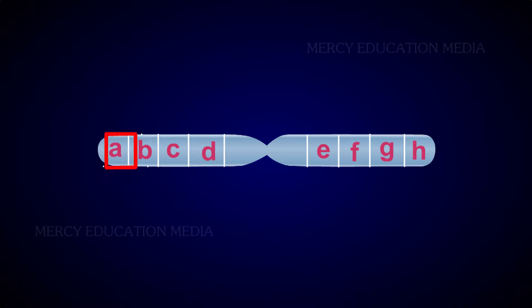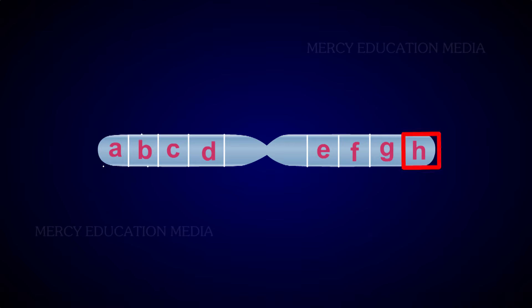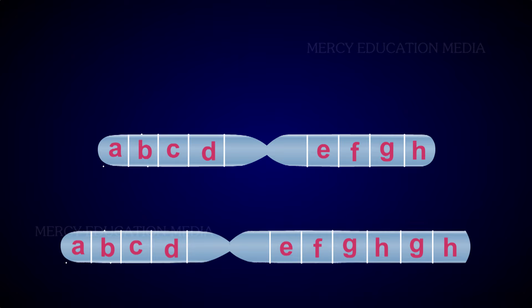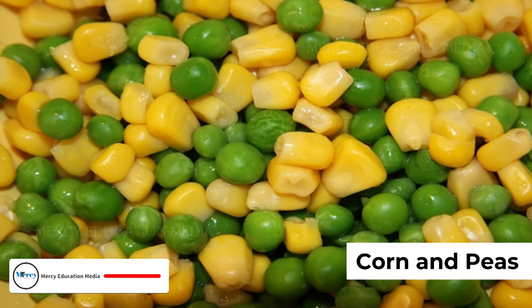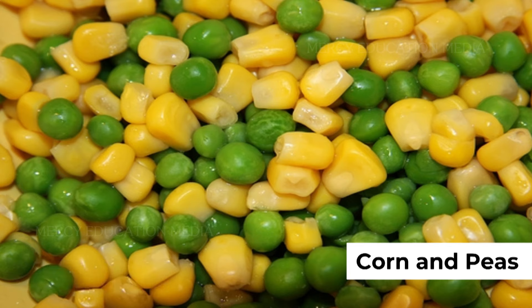For example, the genes in a chromosome are A, B, C, T, E, F, G, and H. The genes G and H are duplicated, giving the sequence A, B, C, D, E, F, G, H, G, H. In Drosophila, corn, and peas, a number of duplications are reported. Some duplications are useful in the evolution of the organism.